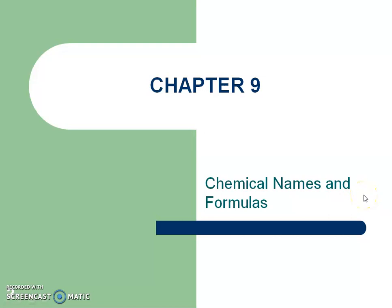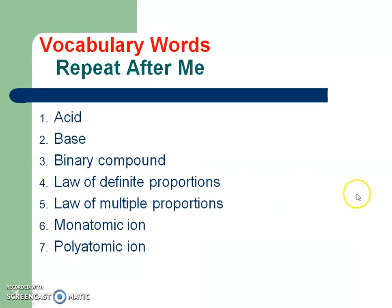This is Mrs. O'Neill for Chapter 9, Section 1, Chemical Names and Formulas. Repeat after me these vocab words: acid, base, binary compound, law of definite proportions, law of multiple proportions, monatomic ion, polyatomic ion.